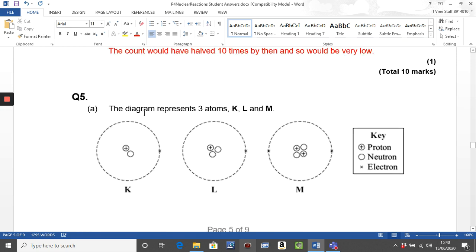Question five, we've got three diagrams. Really important to have looked at the key there. Anything with a positive charge is a proton. Just that circle there is a neutron. And then electrons around the outside. So this one, we've got one proton and one neutron. One proton, two neutrons. Two protons, two neutrons.